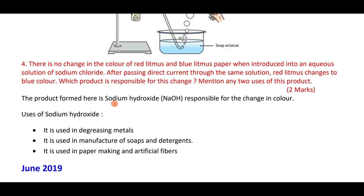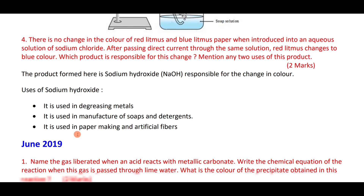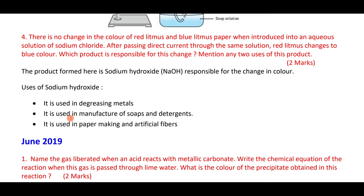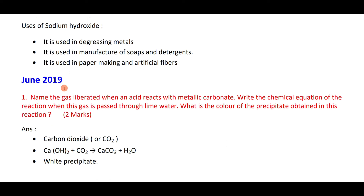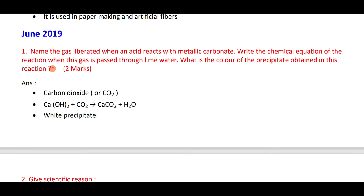Uses of sodium hydroxide: it is used in degreasing metals, in the manufacture of soaps and detergents, in paper making, and in making artificial fibers. The gas liberated when acid reacts with metallic carbonate is carbon dioxide.